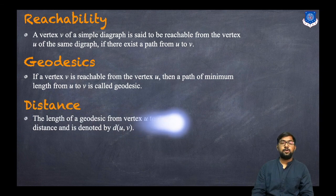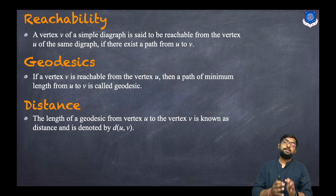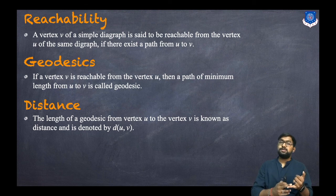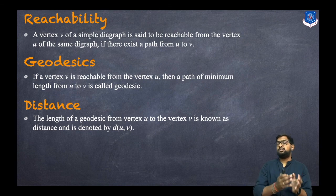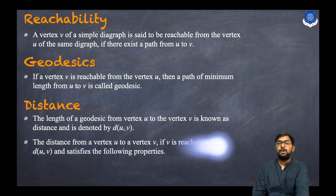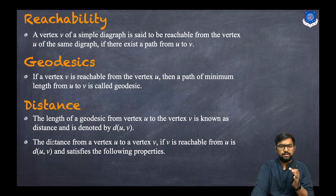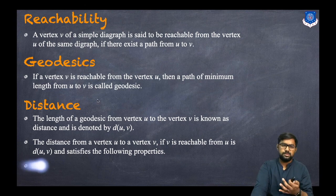Now what is a distance? The length of a geodesic from a vertex u to vertex v is known as the distance. Geodesic means the minimum length path. So the length of a geodesic from vertex u to vertex v is known as the distance, and it is denoted by the symbol d(u, v). If v is reachable from u, it is denoted by d(u, v).